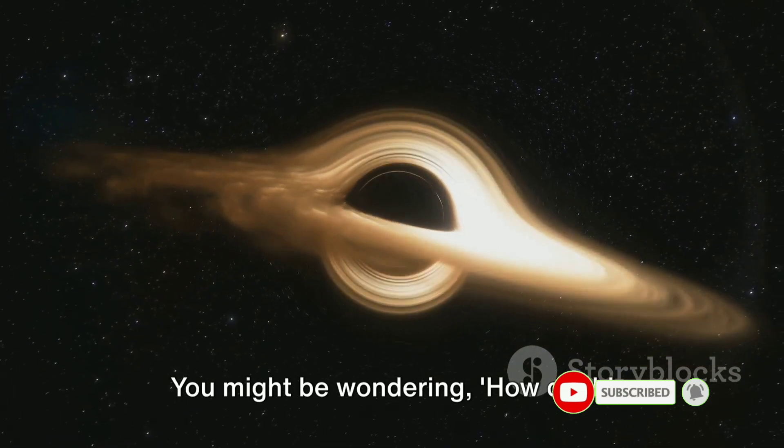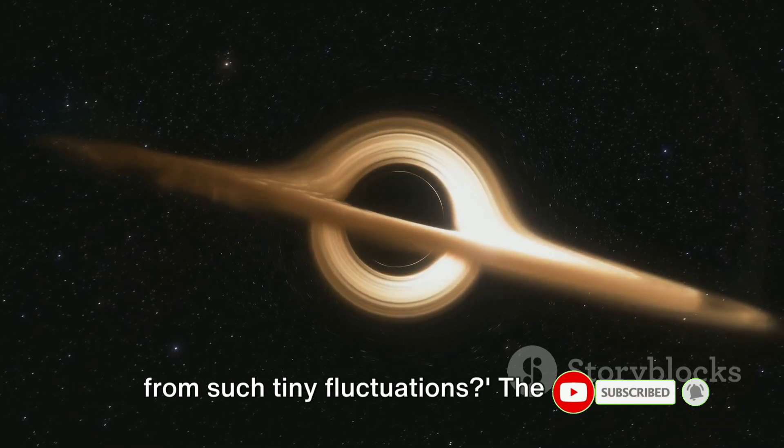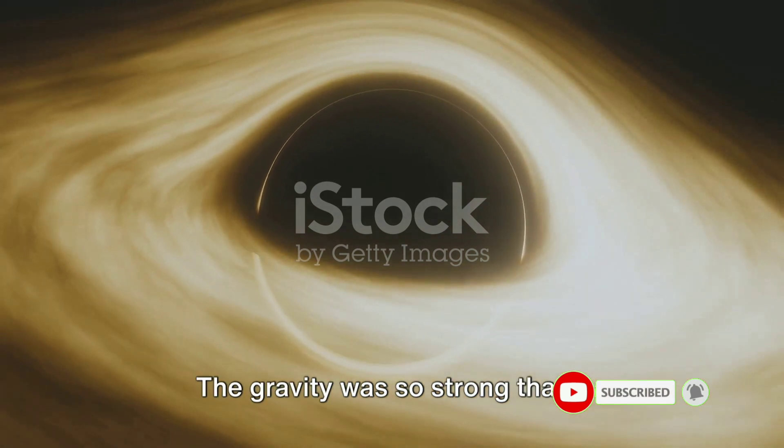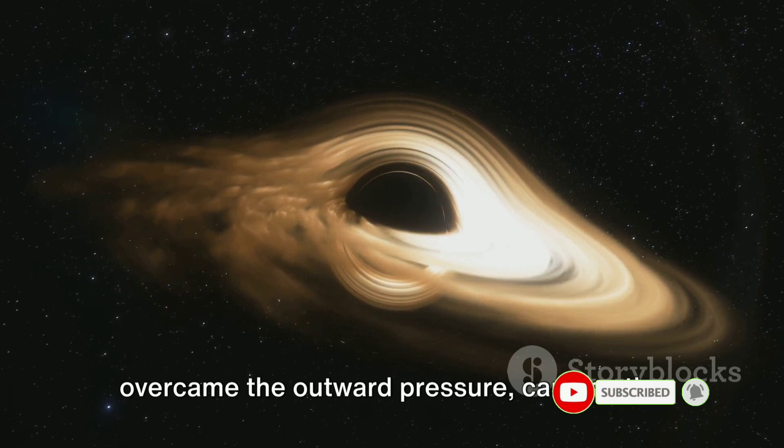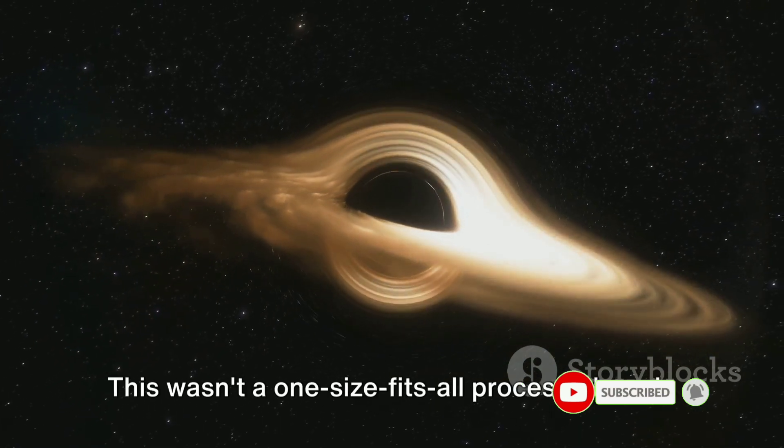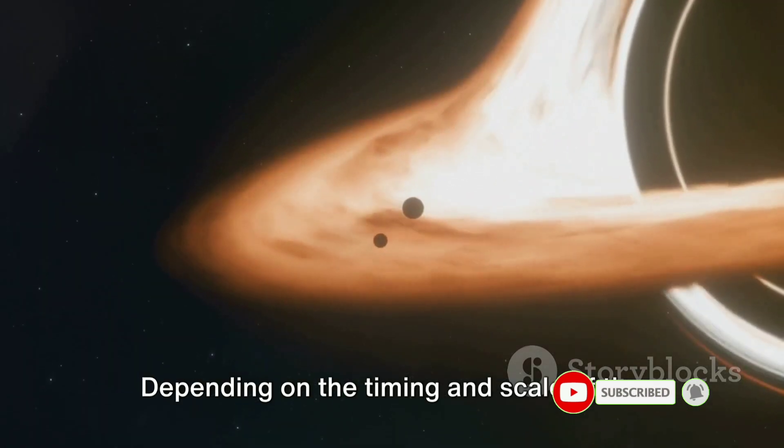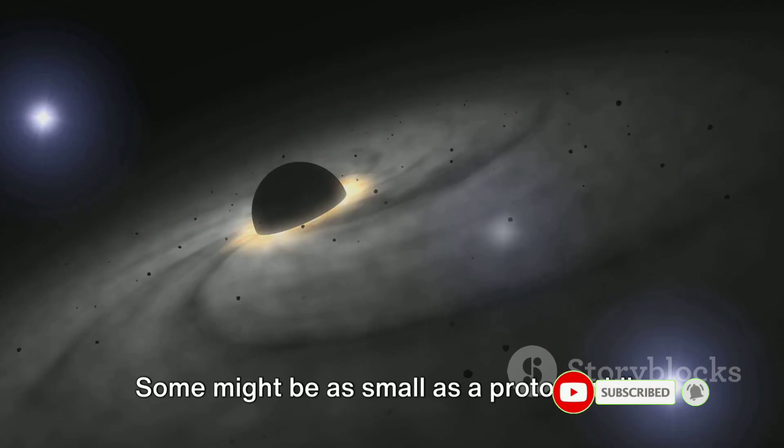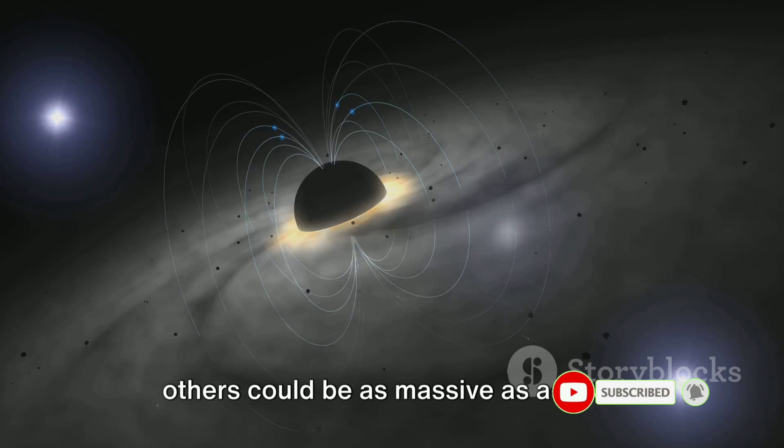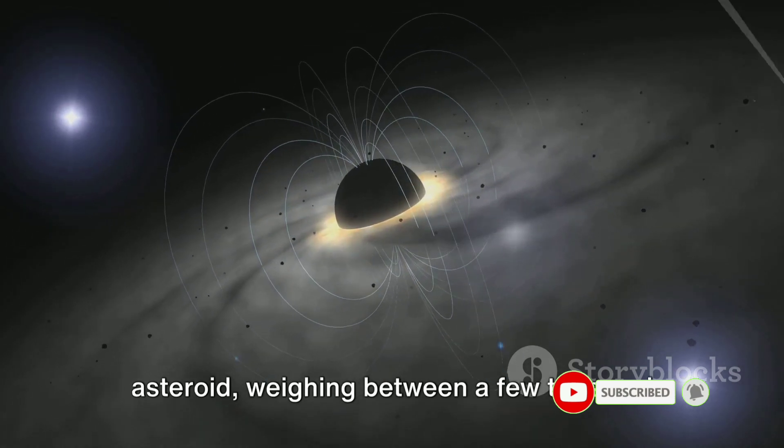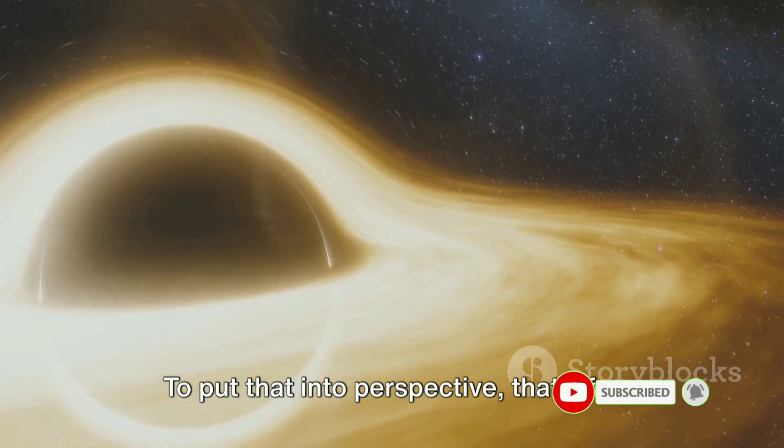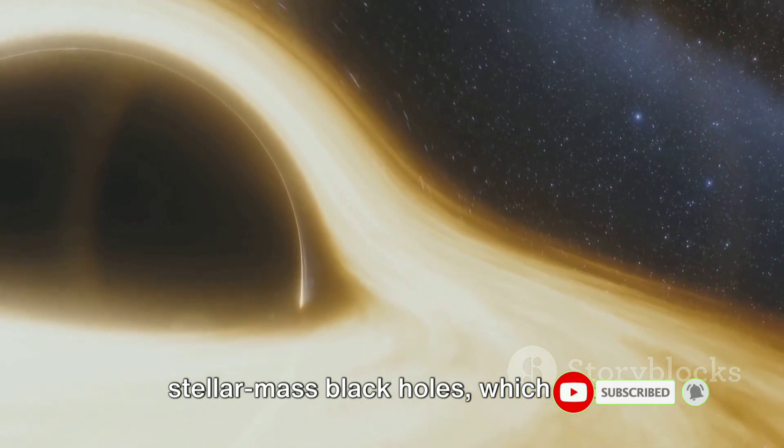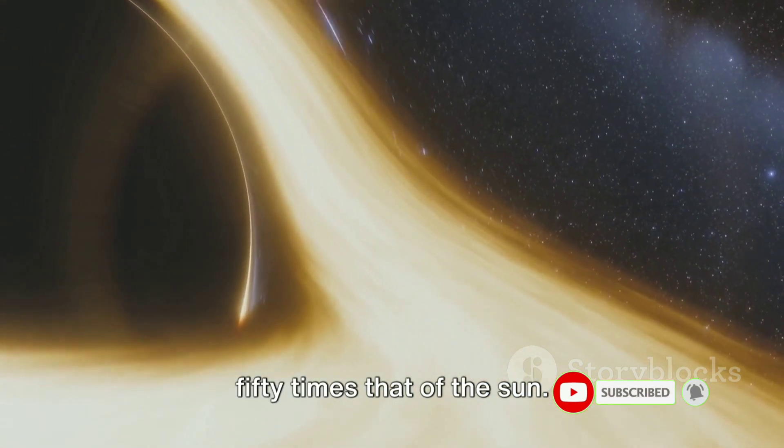You might be wondering, how could something as massive as a black hole form from such tiny fluctuations? The answer lies in the immense gravity of these over-dense patches. The gravity was so strong that it overcame the outward pressure causing the patch to collapse inward, forming a black hole. This wasn't a one-size-fits-all process though. Depending on the timing and scale of the collapse, these primordial black holes could have very different masses. Some might be as small as a proton, while others could be as massive as a small asteroid, weighing between a few tons and a thousand tons. To put that into perspective, that's far less than the mass of the smallest black holes we've discovered to date, known as stellar mass black holes, which have masses equivalent to between three and fifty times that of the sun.